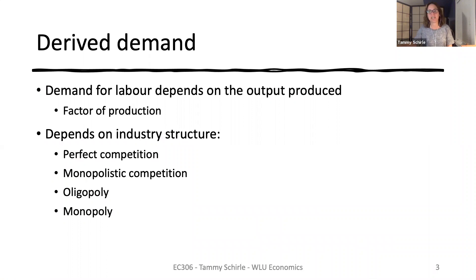When we talk about the demand for labour, we have to keep in mind that labour itself is only demanded to the extent that it can be used to produce other goods. The demand for auto workers, for example, really depends on how many cars and trucks people want to buy. So the demand for labour is derived and will depend in part on how the goods or services market is structured. For the most part, we will consider a market with perfect competition, but there are other structures to consider.